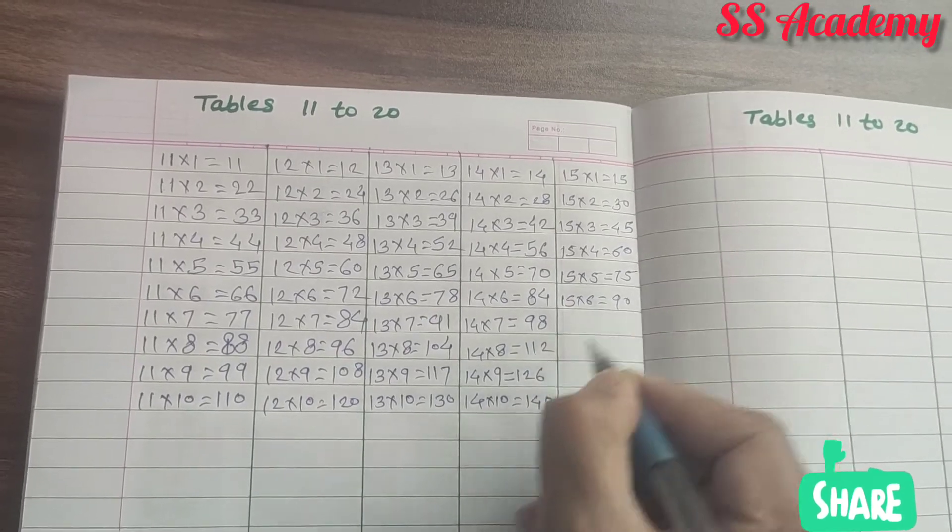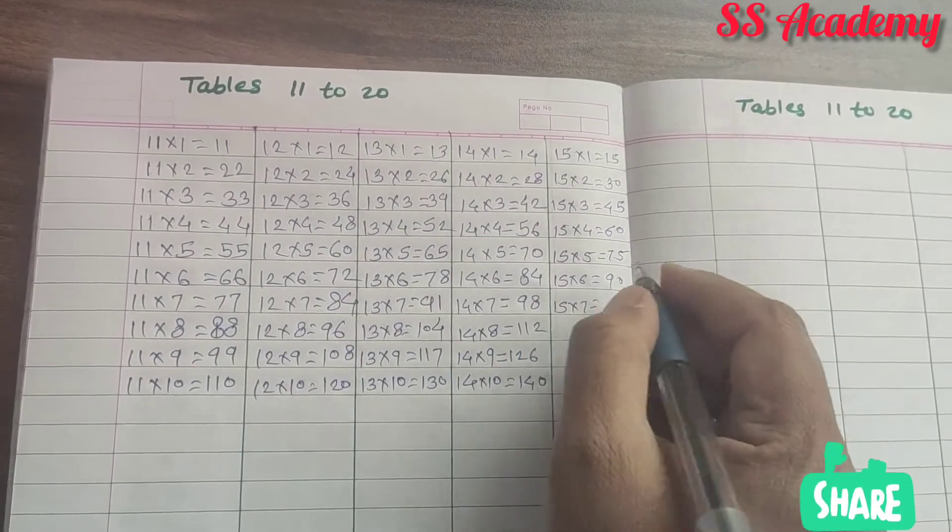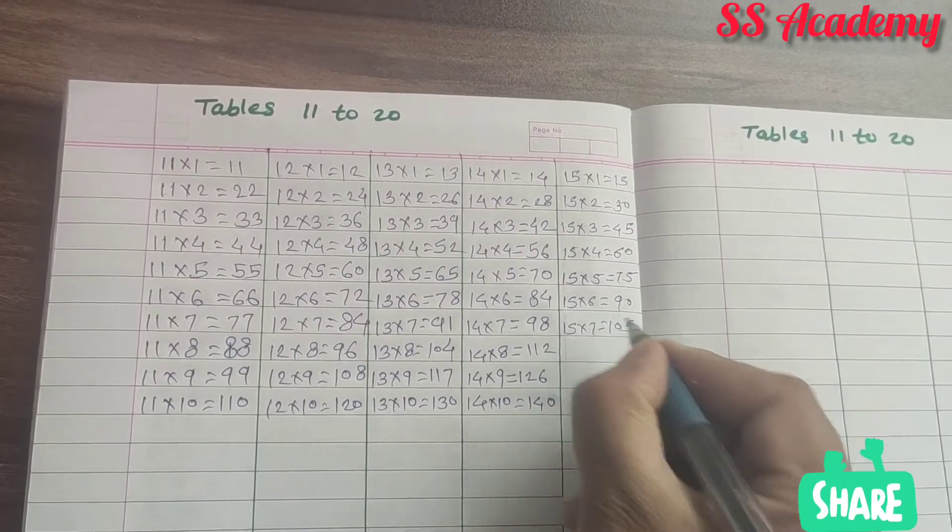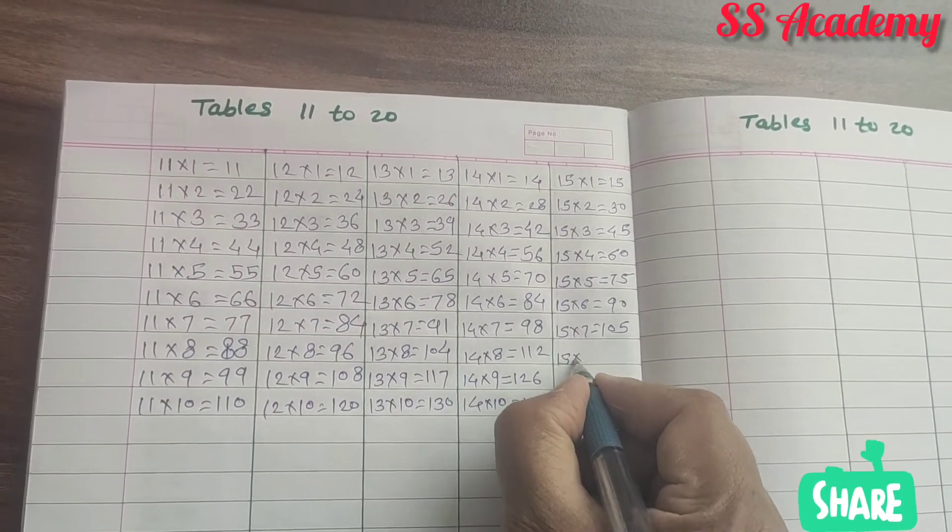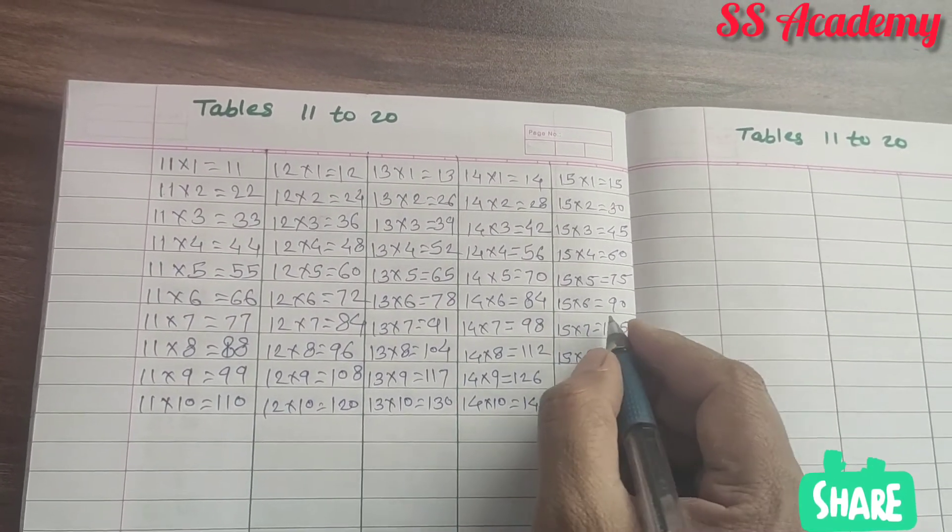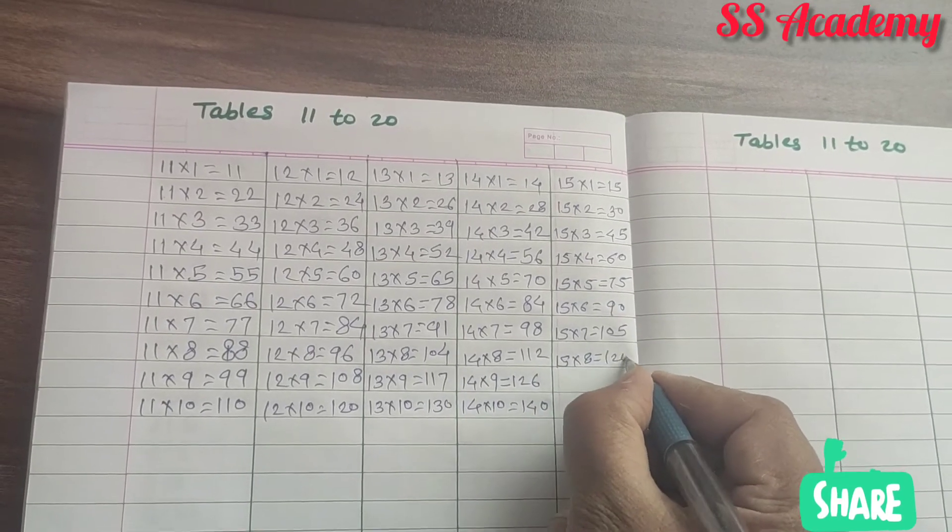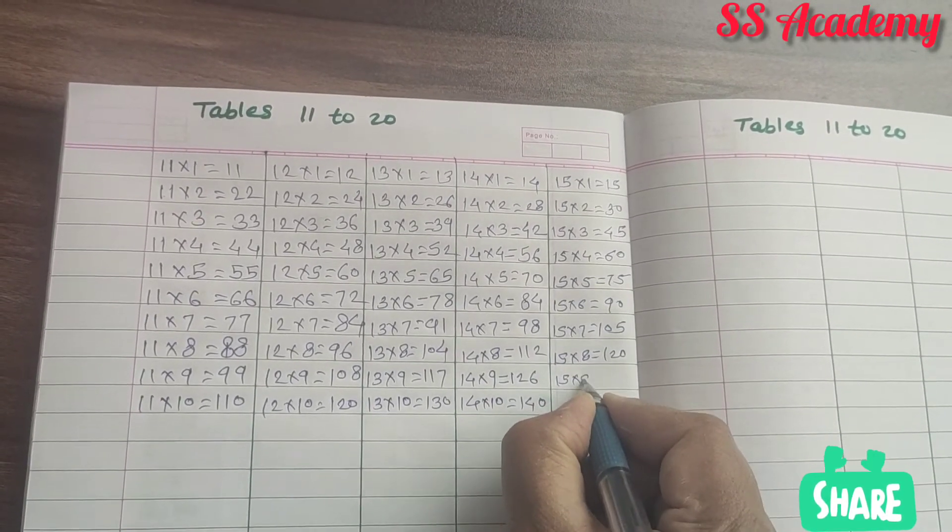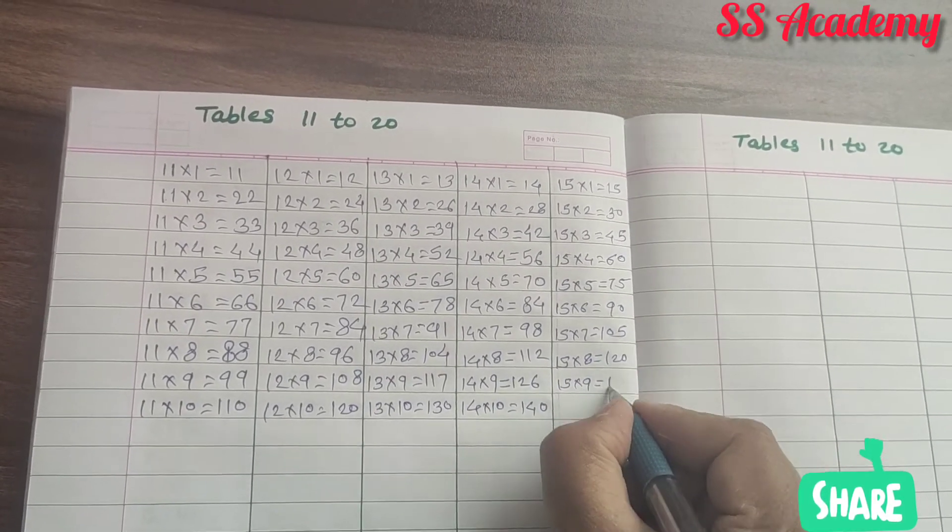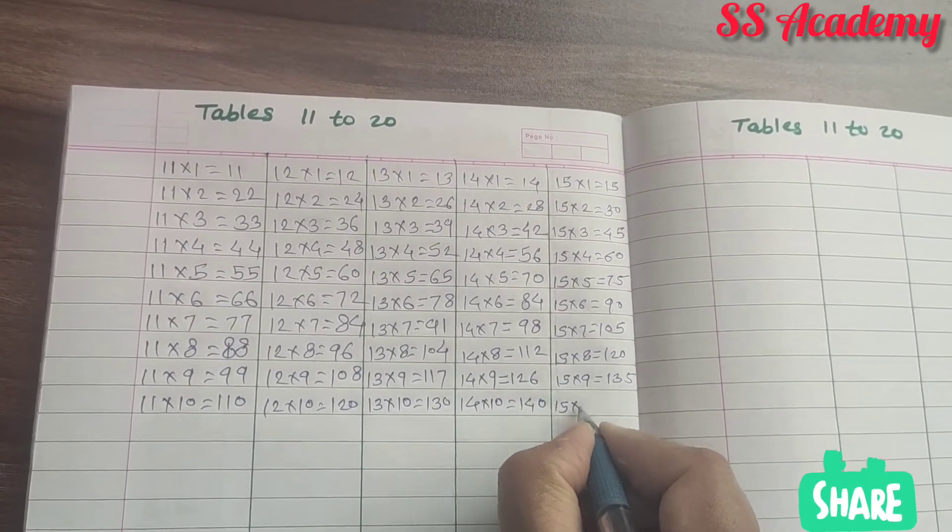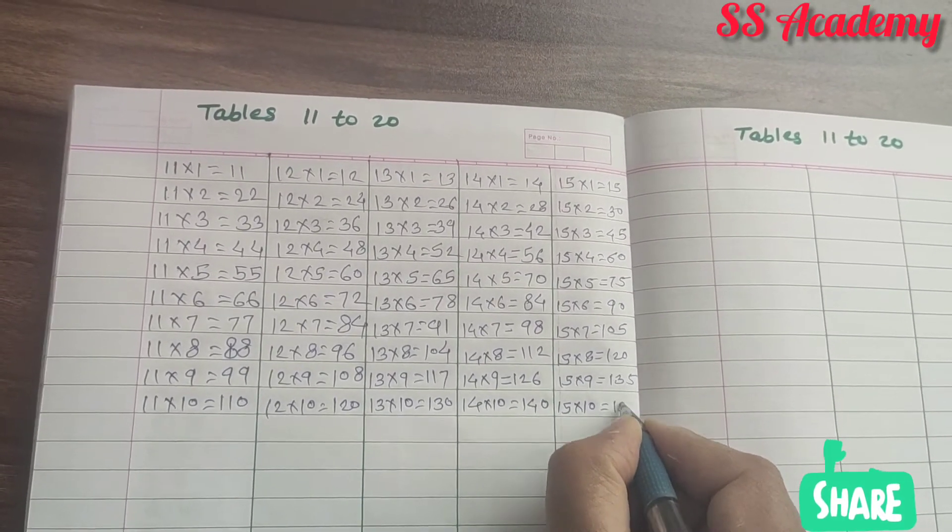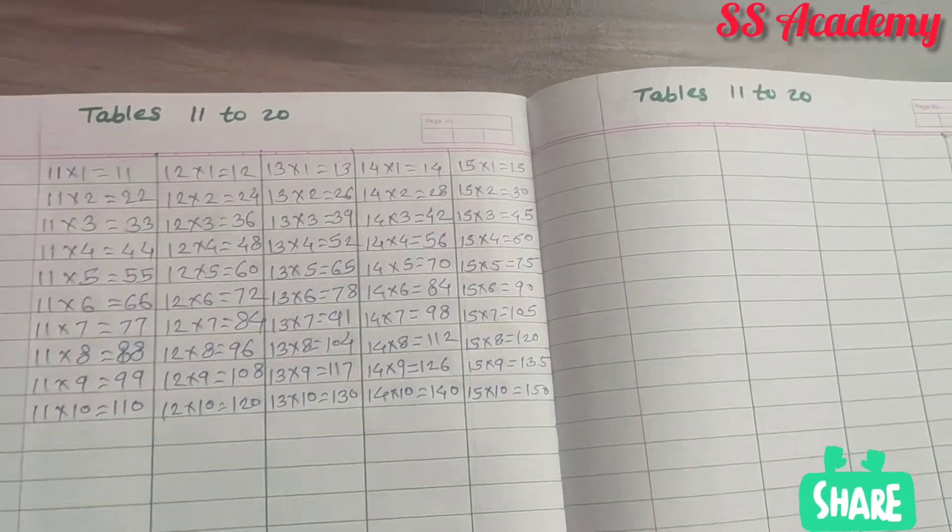15 times 6 is 90. 15 times 7 is 105. 15 times 8 is 120. 15 times 9 is 135. 15 times 10 is 150.